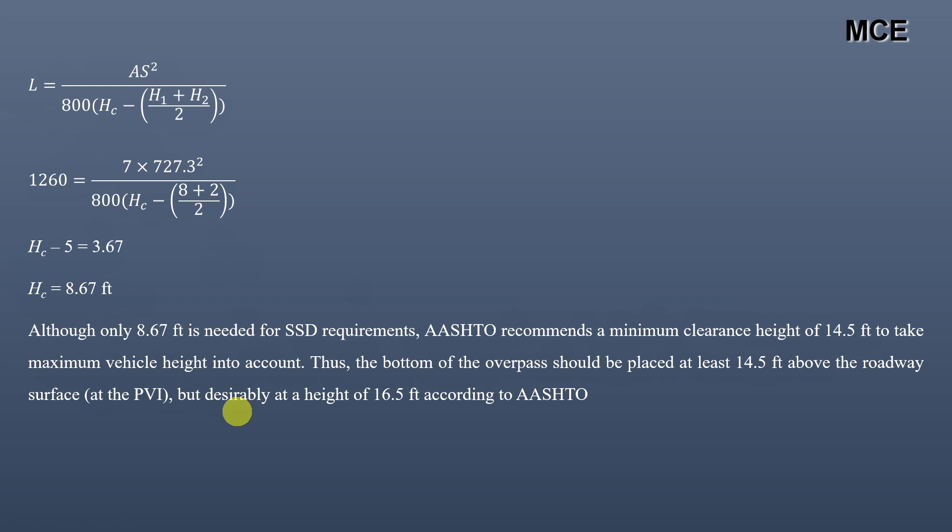This is how you can calculate the minimum length of the sag vertical curve to provide adequate stopping sight distance as well as the clearance height. I hope this solution video was clear and effective and you learned something new. If you still have doubts, you can write them in the comment box and I will try my best to answer. If you found this video helpful, please subscribe to my channel and share this video. Thanks for watching Master of Civil Engineering — stay tuned.